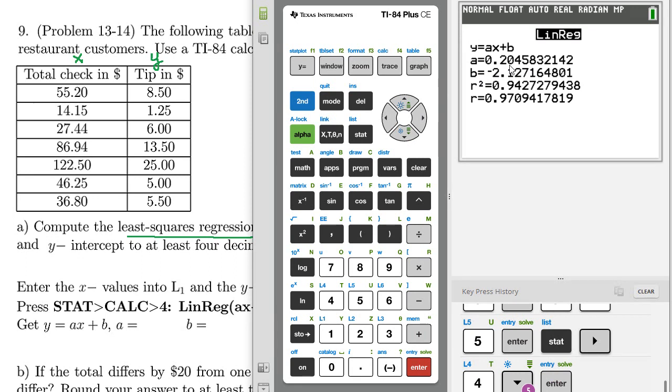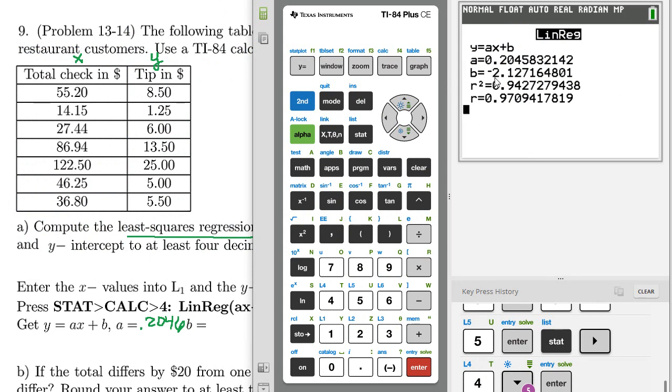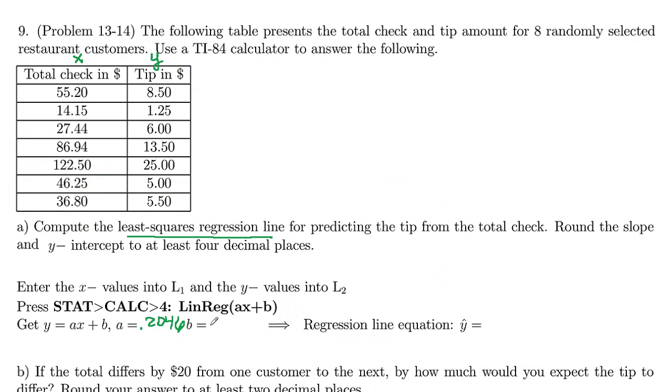So here's our slope, a, and our y-intercept, b. So in the regression equation, which is y equals ax plus b, our a is 0.2046. So 0.2046. And then our b, our y-intercept, negative 2.1272. And that gives us four decimal places, which is what we wanted.